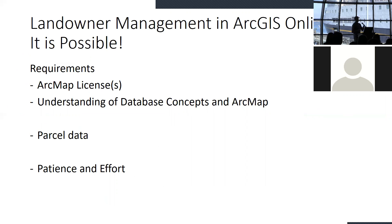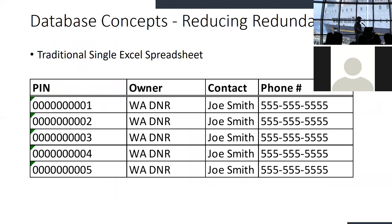I'm going to get into a demo of how this is possible without having a developer build you a SQL Server database. There have been a lot of improvements in ArcGIS Online in the last couple of years, so if you have ArcMap licenses it is possible to start managing owners and properties in ArcGIS Online. You're going to need parcel data, which you can generally get from county websites — some cities have it as well. A major reason to move from a traditional Excel spreadsheet to a relational database is to reduce redundancy and errors in your data.